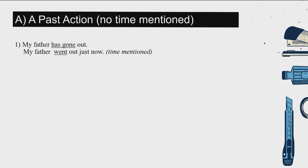If the time is mentioned — for example, 'My father went out just now' — the time 'just now' is mentioned, so we use past tense: 'My father went out.' So when there's 已经发生 but 没有讲时间, use 'has' or 'have' with a past participle. But if time is mentioned, please use past tense.